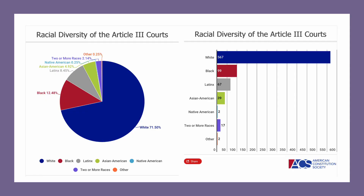Let's talk about who these judges are. Looking at a current snapshot from the American Constitution Society on racial diversity, 71.5% of federal judges in our system are white, 12% African American, and then breakdowns of Latinx, Asian, Native American, and others. So it is a predominantly white judiciary.